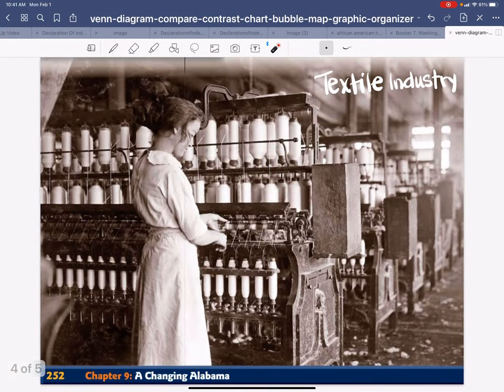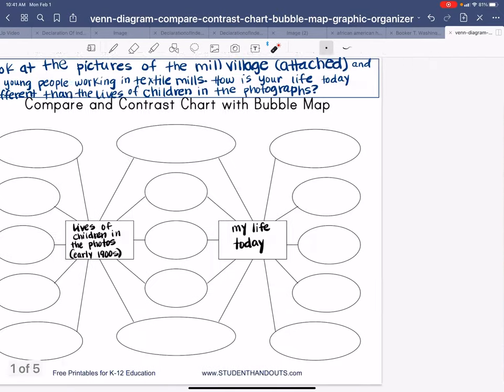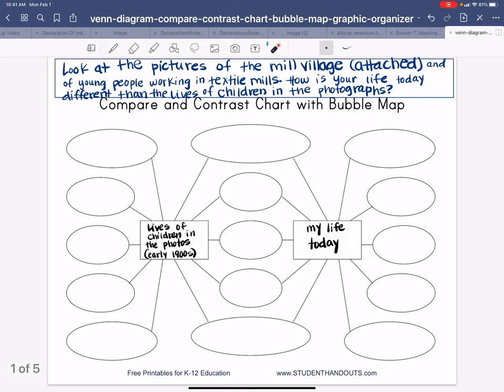Textile industries. Miners. So all you're doing is you're looking at these photographs, and you're comparing and contrasting. That means you're telling how they're alike, how these children in these photographs in the early 1900s are alike, and how they're different than you.